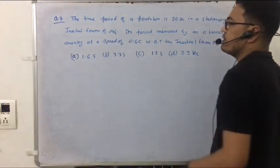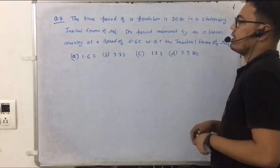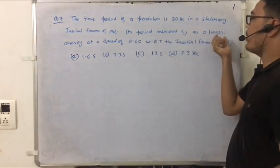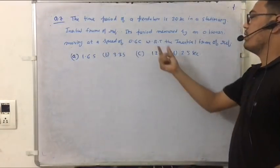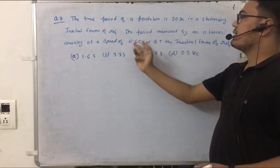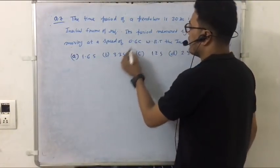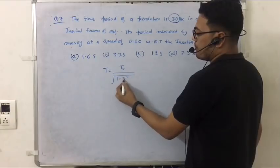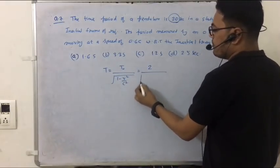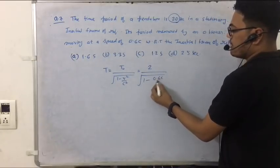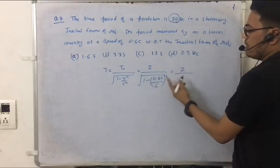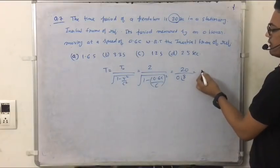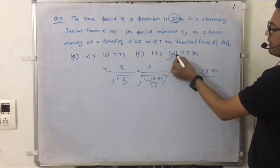The next question is question number 7, related to relativity concept. We have given the time period of pendulum is 2 seconds in a stationary inertial frame and we have to find its period measured by an observer moving at a speed of 0.6c with respect to the initial frame. Remember that t is equal to t0 upon square root of 1 minus v squared upon c squared. So t0 was 2 seconds, v is 0.6c. So this is 2 upon 0.8. If you solve this, you will get 2.5 seconds. The answer is d.